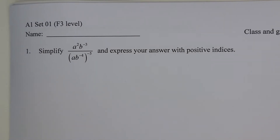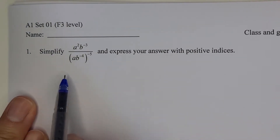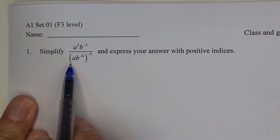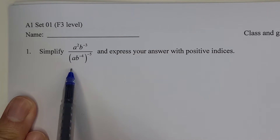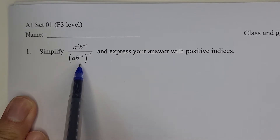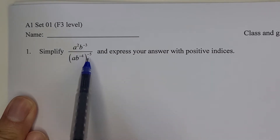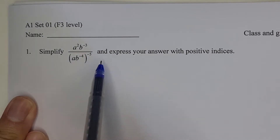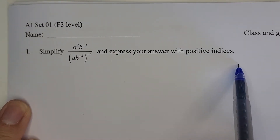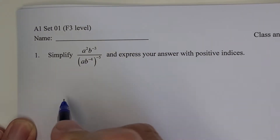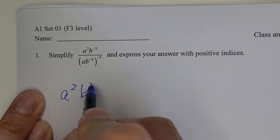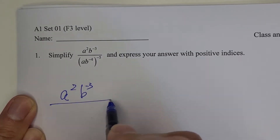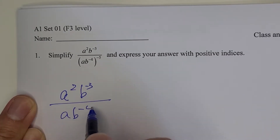Let's look at the solution of this paper question: simplify a squared times b to the power of negative 3, over a times b to the power of negative 4, bracket to the power of negative 5, and express your answer with positive index. First, write down the expression: a squared b to the negative 3, over a times b to the power of negative 4, whole power negative 5.